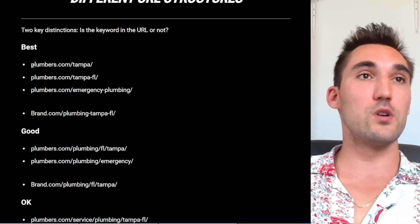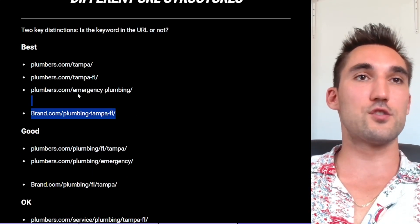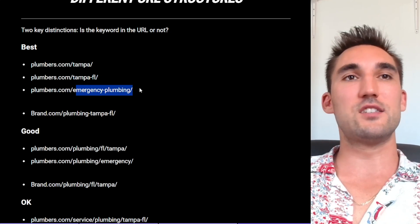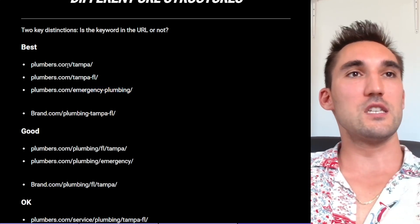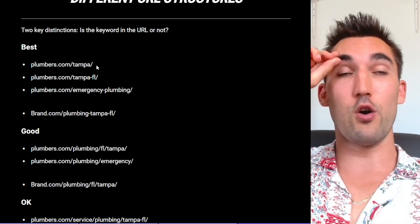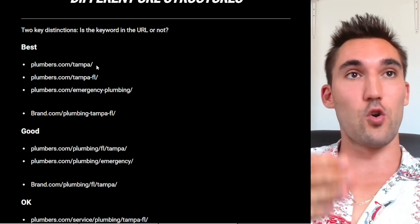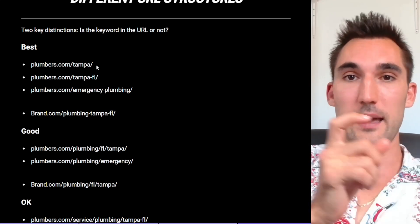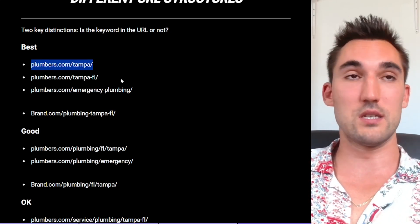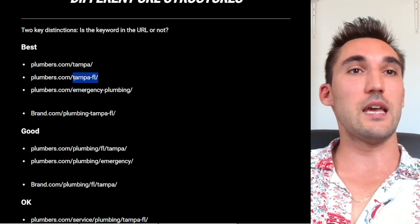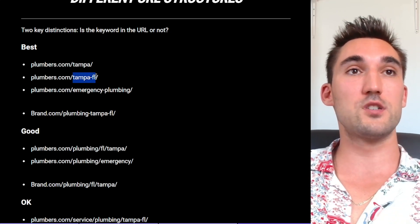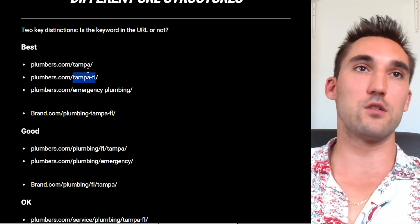If you have the keyword in the URL, here are the best URL structures you can go with. Using location as an example: if you've got plumbers.com/tampa, it's pretty clear what the intent of this page is — it's clearly a plumber talking about the service in Tampa, so plumbing and Tampa plumbers in Tampa. That's a good structure to use; it's one of the best. The second option is plumbers.com/tampa-FL — that's perfectly fine as well. If people search 'plumbers Tampa FL,' you can definitely include that.